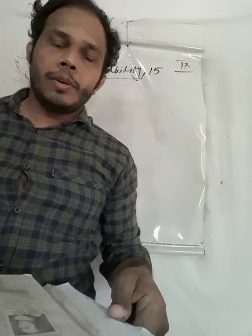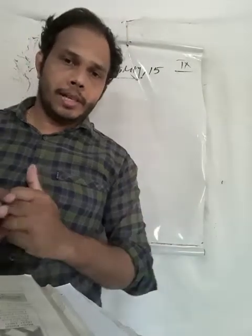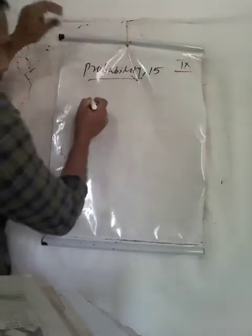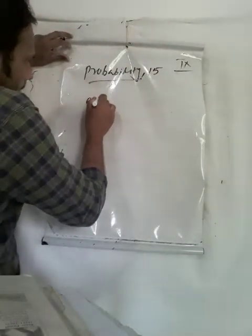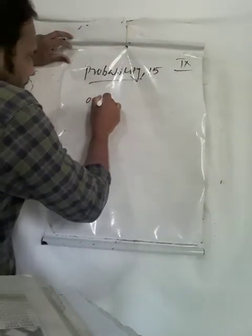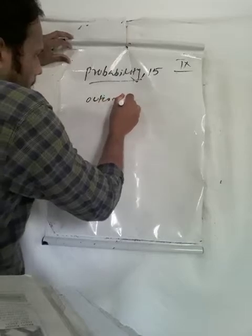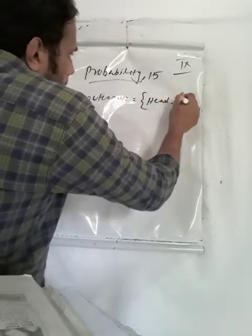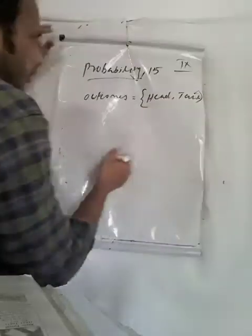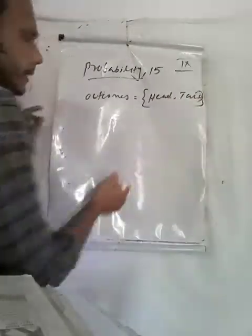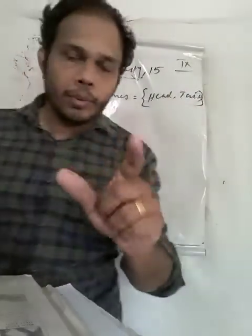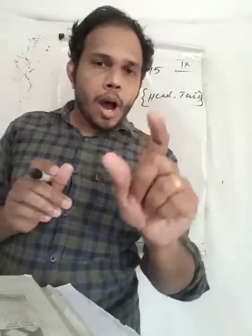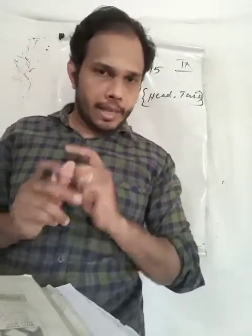So probability deals with the possibility. While you are tossing a coin, what are the outcomes? The outcomes are equal to head and tail — two cases are there, head and tail.